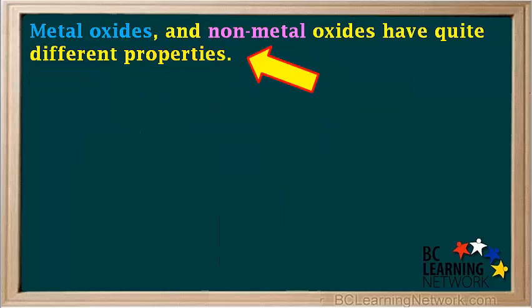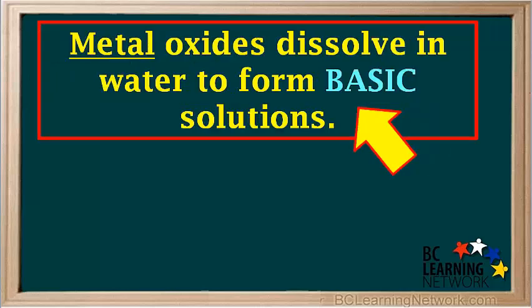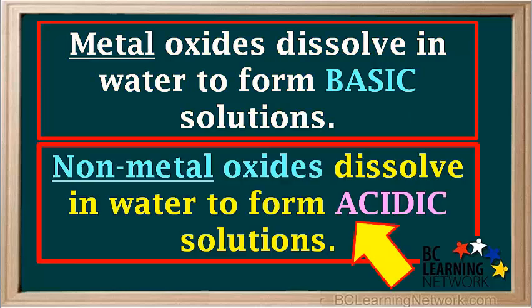Metal oxides and nonmetal oxides have quite different properties. One very important difference is what they produce when dissolved in water. Metal oxides dissolve in water to form basic solutions, while nonmetal oxides dissolve in water to form acidic solutions.